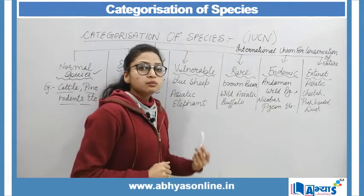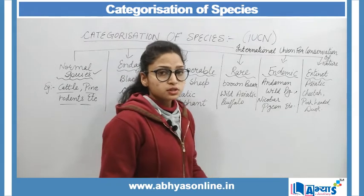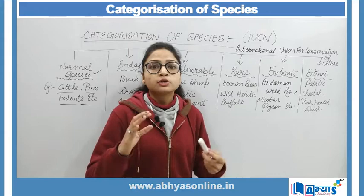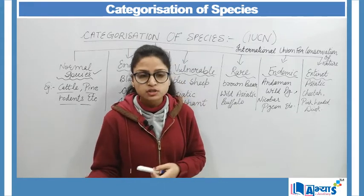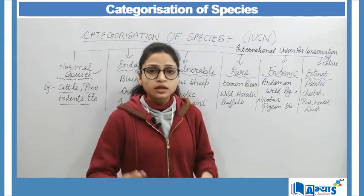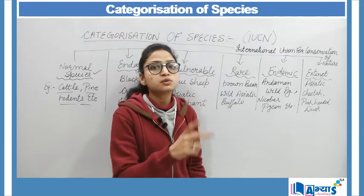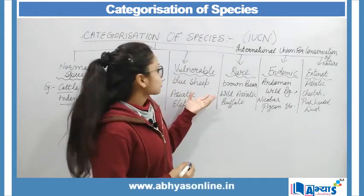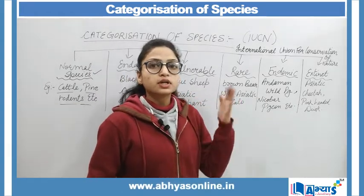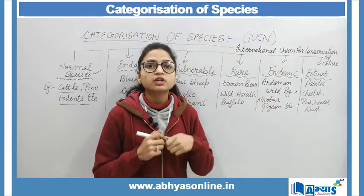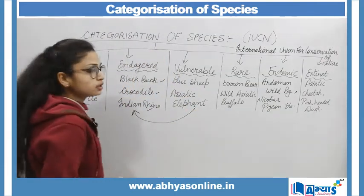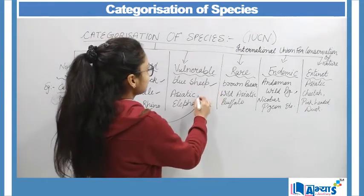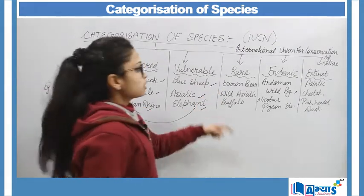Vulnerable species वो species हैं जो decrease होना start हो गई हैं due to the environmental changes, pollution, और deforestation — यह तो basic reasons हैं जो इन सभी species के खत्म होने का main कारण हैं। Vulnerable species बहुत जल्द endangered category के अंदर include हो जाएंगी। इसके examples हैं blue sheep और Asiatic elephant।